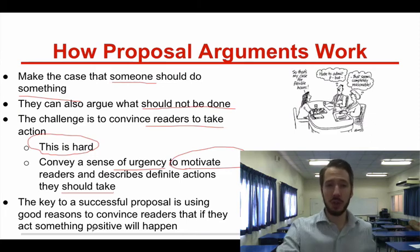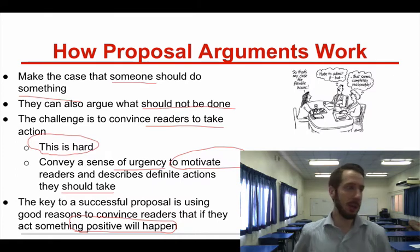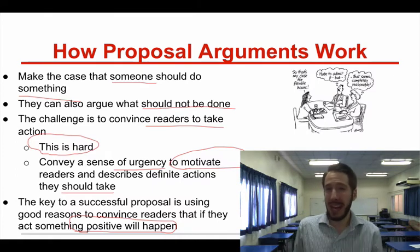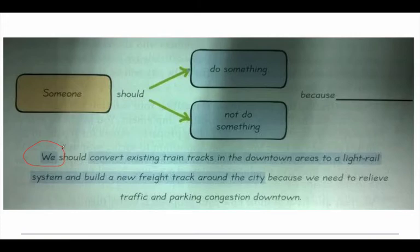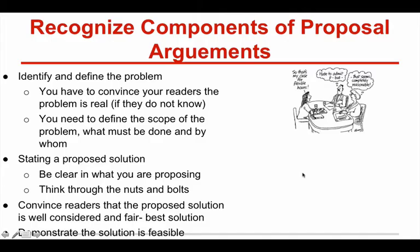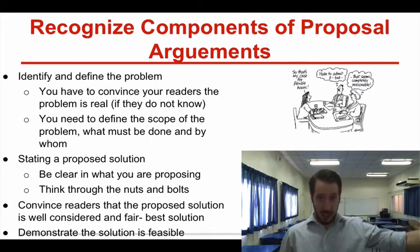You have to make the argument seem so important that we actually have to take action. You really have to convey a sense of urgency to motivate your readers and tell us what we should actually do — because if you're not telling us what to do, we're just going to be stressed about it with no plan of action. You also have to convince your readers that something positive will happen if we make a change. If I'm going to donate money or time to save the whales or eliminate plastics from oceans, something good has to actually come about to motivate me. So here's a basic example: 'We should convert existing train tracks in downtown areas to a light rail system and build a new freight track around the city because we need to relieve traffic and parking congestion downtown.' It's your goal to make people think that's important, convey a positive result, and convince them to actually do something.